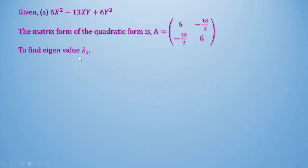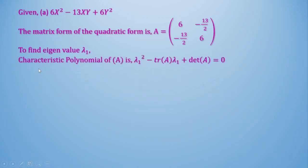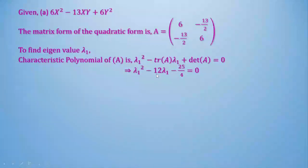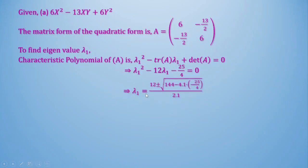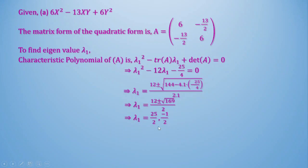To find the eigenvalues λ₁ of this matrix, we use the characteristic polynomial: λ₁² - trace(A)·λ₁ + det(A) = 0. Here trace(A) = 6 + 6 = 12, and det(A) = -25/4. Applying Sridharacharya's formula, we get two eigenvalues: 25/2 and -1/2. So the rank is 2 (two non-zero eigenvalues) and the index is 1 (one positive eigenvalue).